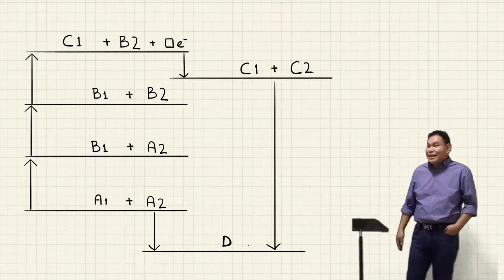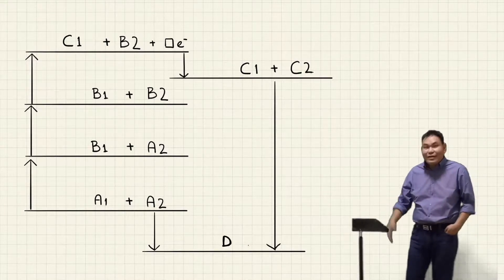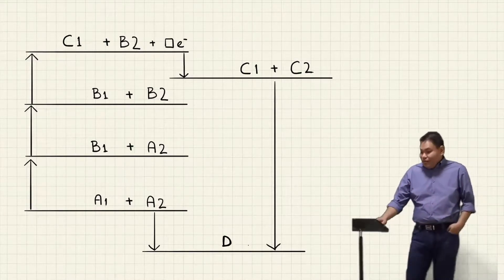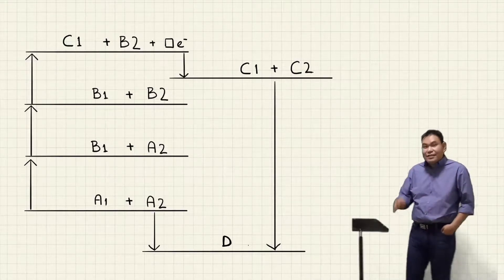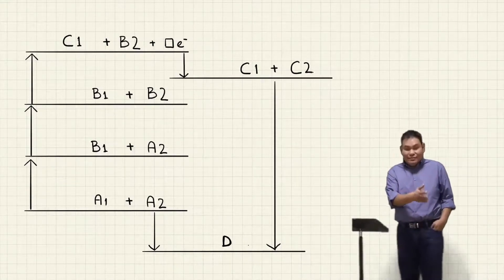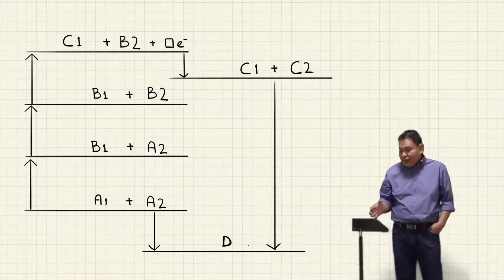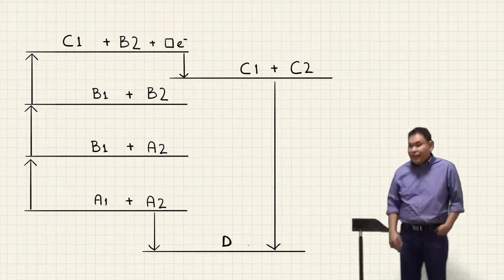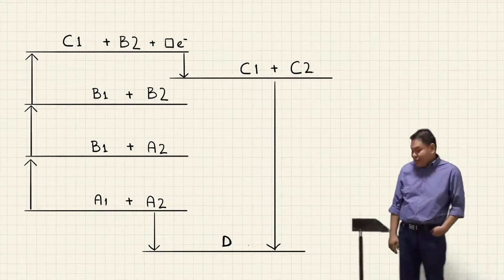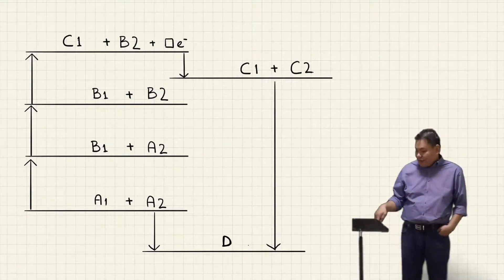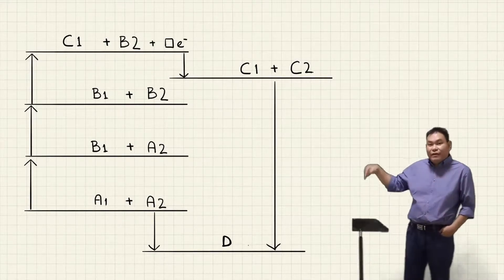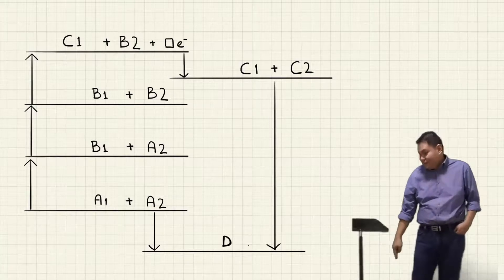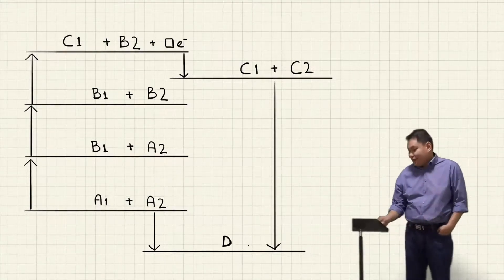We now come to the last part of this video about the Born-Haber Cycle. We are going to put the enthalpy changes to all the examples that we did in the previous part. In this picture we have six arrows, six enthalpy changes — pointing up, up, up, down, then a very big downward arrow which is the lattice energy.